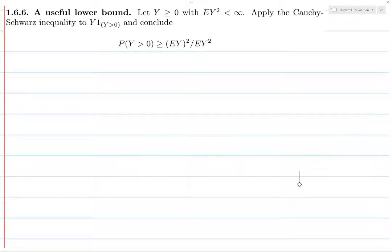This exercise gives us a way to get a lower bound on the measure of the set where a given random variable is positive. Well, a random variable which is greater than or equal to zero - it gives you a lower bound on the measure of the set where it's strictly greater than zero.